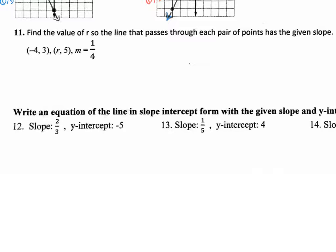How do we usually find a missing value when we know other values? You create an equation. So let's start out by writing what we know. Here's the slope formula: y2 minus y1 divided by x2 minus x1. You need to know that formula to work out this slope problem. Now we need to label our coordinates. Our first coordinate is the x1 and y1 value, and our second coordinate is the x2 and y2 value.